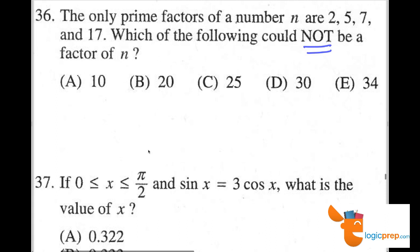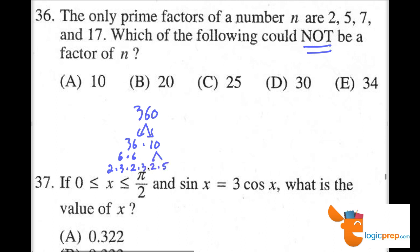So this is an interesting problem. First I want to talk about prime factorization, because any number can be expressed as the product of its prime factors. For example, 36 times 10 is the same as 6 times 6, which is 2 times 3 times 2 times 3, and this is 2 times 5. So 360 can be expressed as 2 cubed times 3 squared times 5. And that's 360.